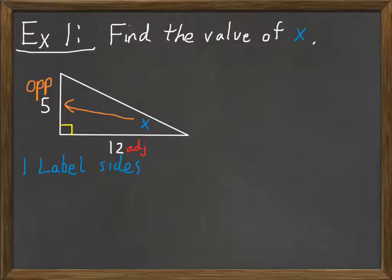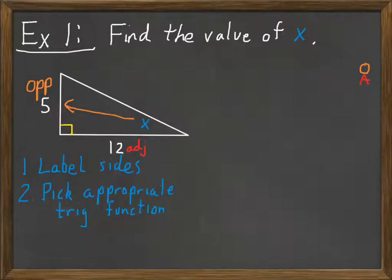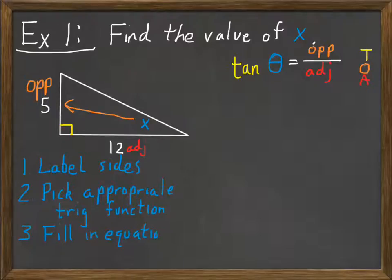We could use it because we know it's 13, but let's just focus on the 5 and the 12. So then the second step is still the same: Pick an appropriate trig function. For this problem, I have the opposite and the adjacent. So what part of SOHCAHTOA is that? That's the TOA part. So that means my trig function for this problem is the tangent. Tangent of theta equals the opposite over the adjacent.